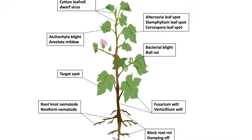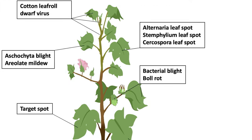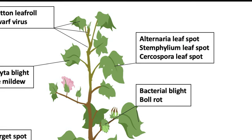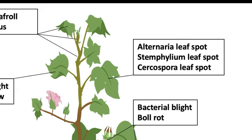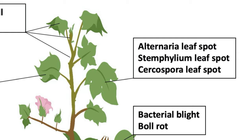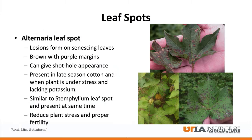The first diseases that we will cover are the foliar diseases. Alternaria leaf spot, Stemphylium leaf spot, and Cercospora leaf spot are commonly referred to as the leaf spot complex in cotton. These diseases are quite hard to distinguish one from the other in the field. Alternaria leaf spot usually forms on senescing leaves, with lesions that are small and brown with dark purple margins. Mature lesions can sometimes fall out giving a shot hole appearance.